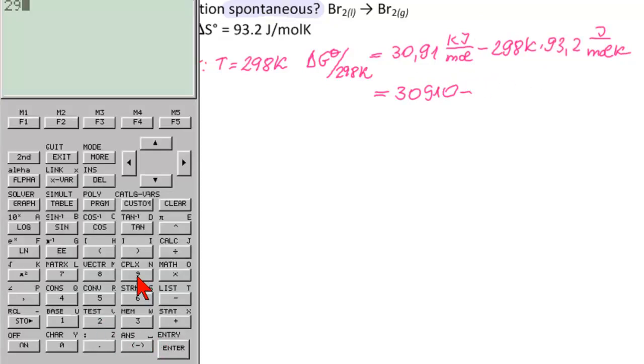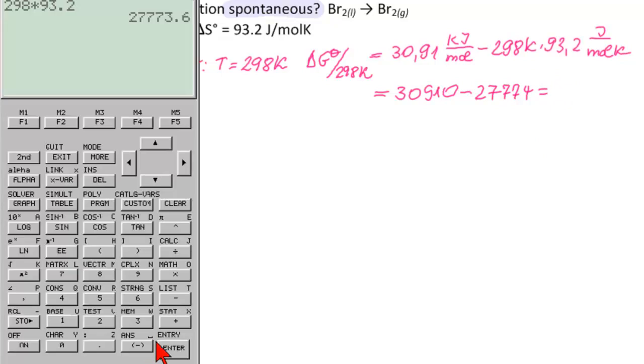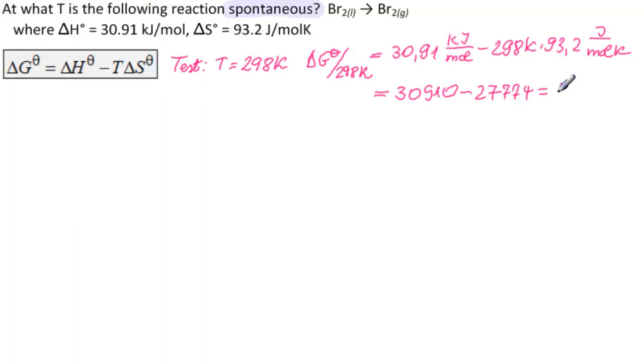So 298 times 93.2, that's 27,774. So how much would that be? We need 30,910 minus that answer, and that is 3,136 joules per mole. What that is, is greater than zero, so not spontaneous. Remember, spontaneous is anything that's under zero.